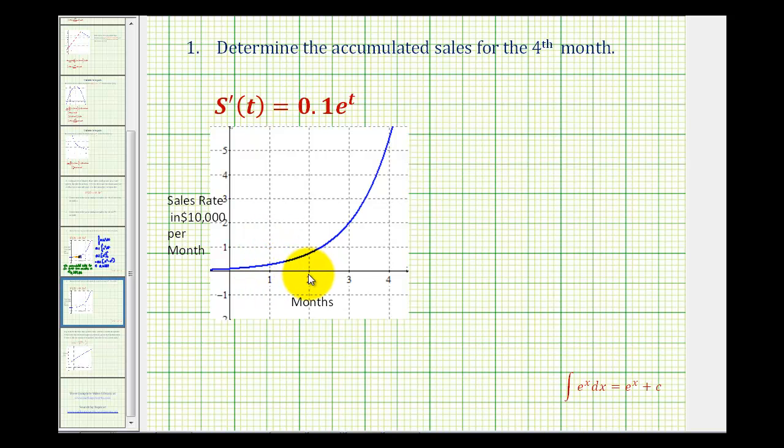From one to two would be the second month. From two to three would be the third month. And then from three to four would be the fourth month. So to find the accumulated sales only for the fourth month, we're going to have to integrate from three to four.